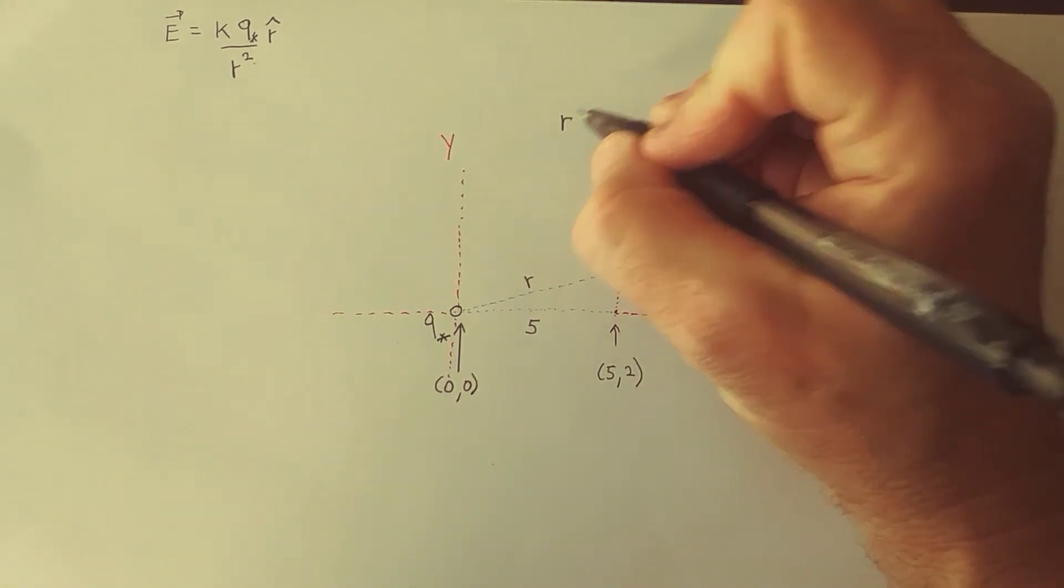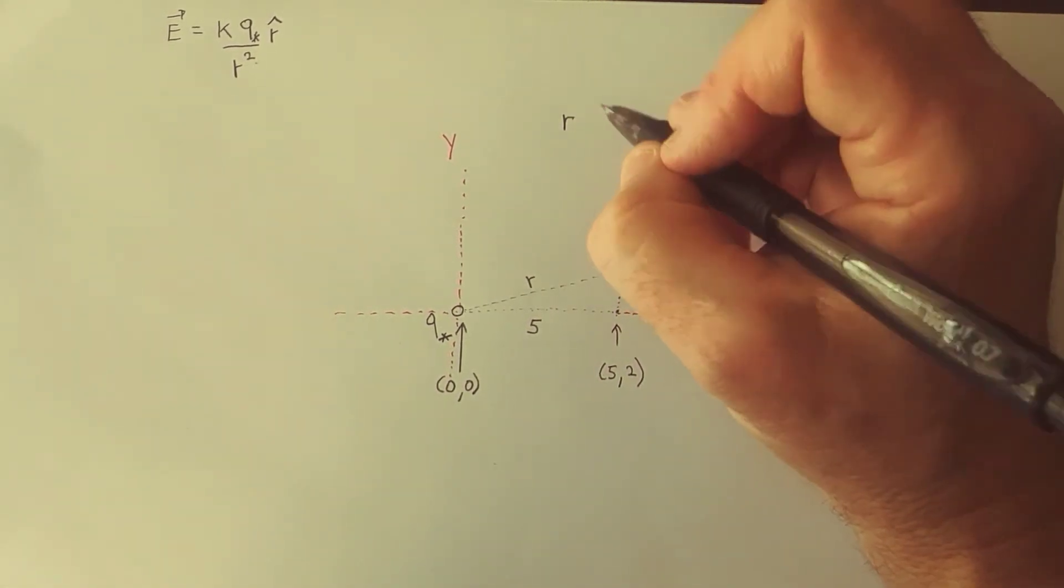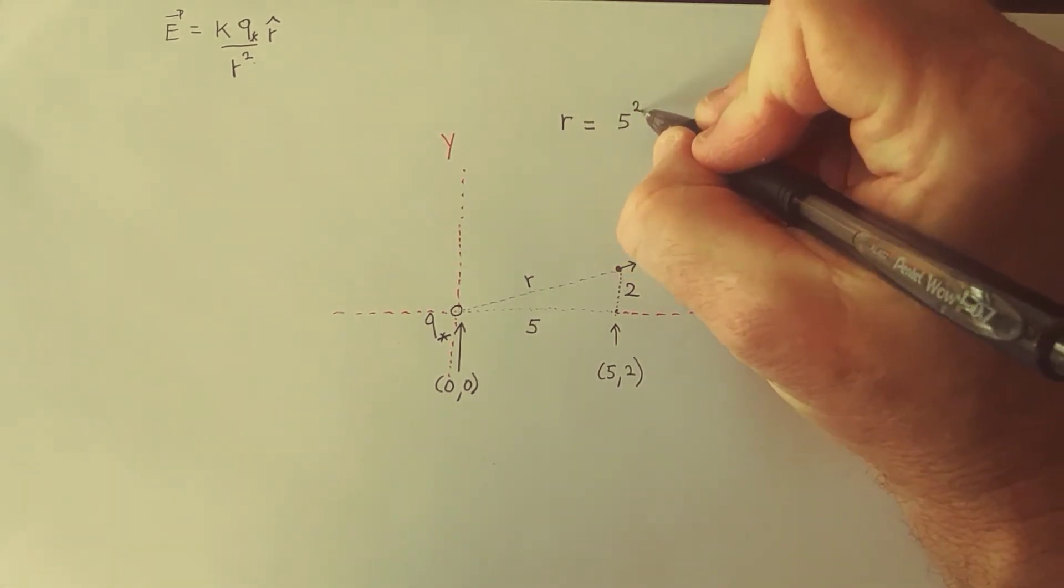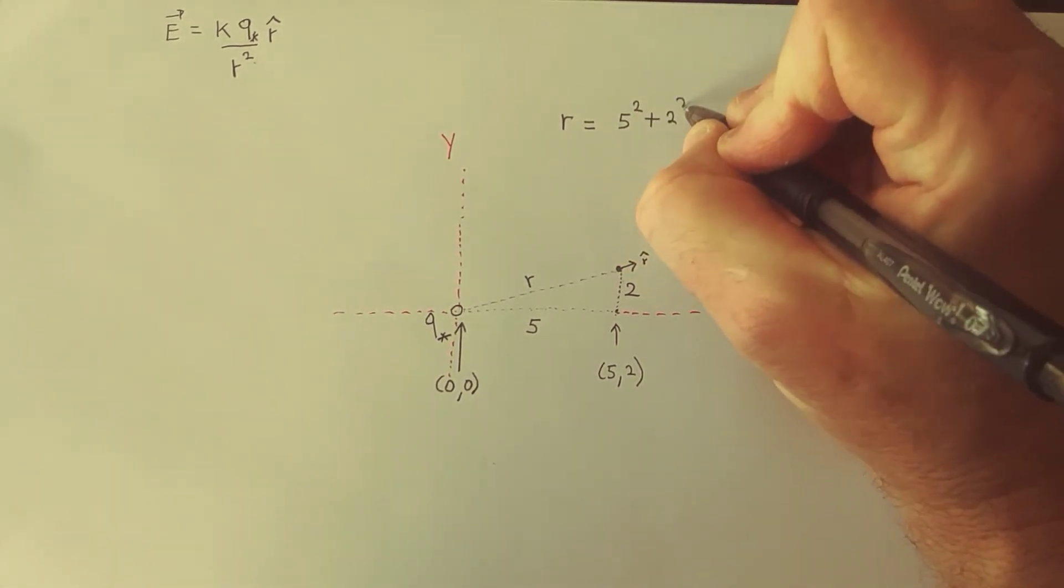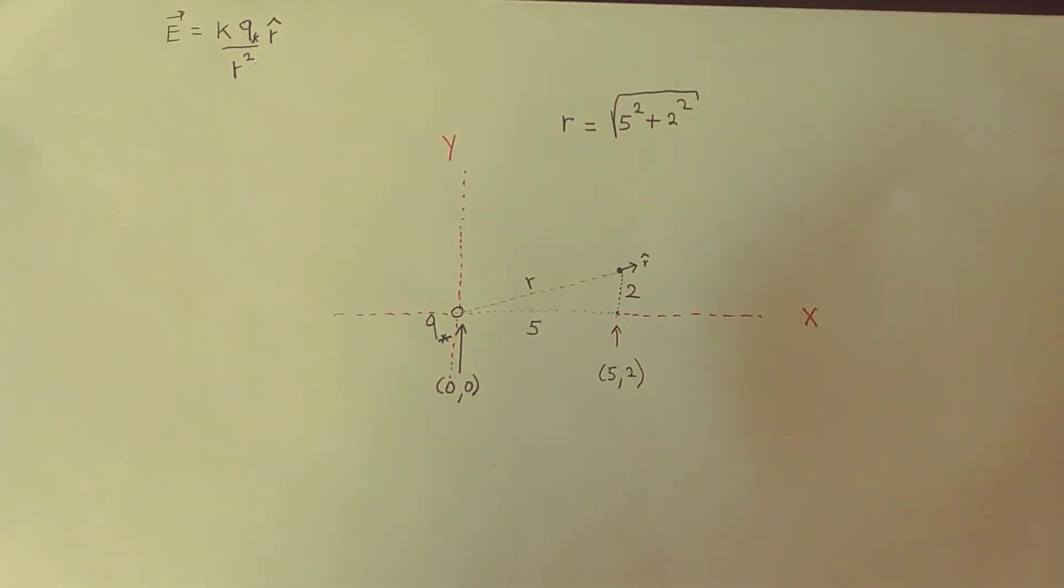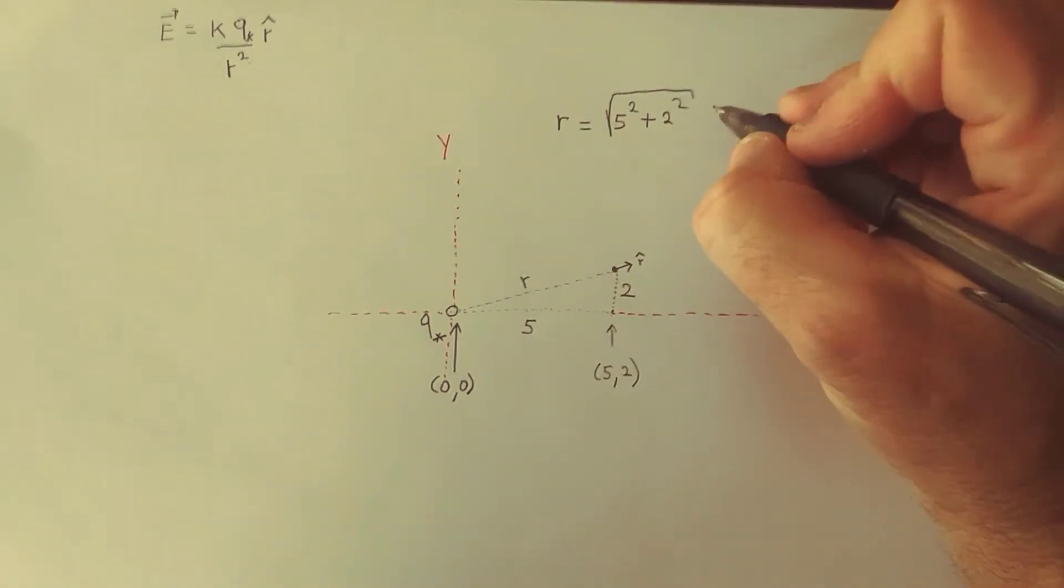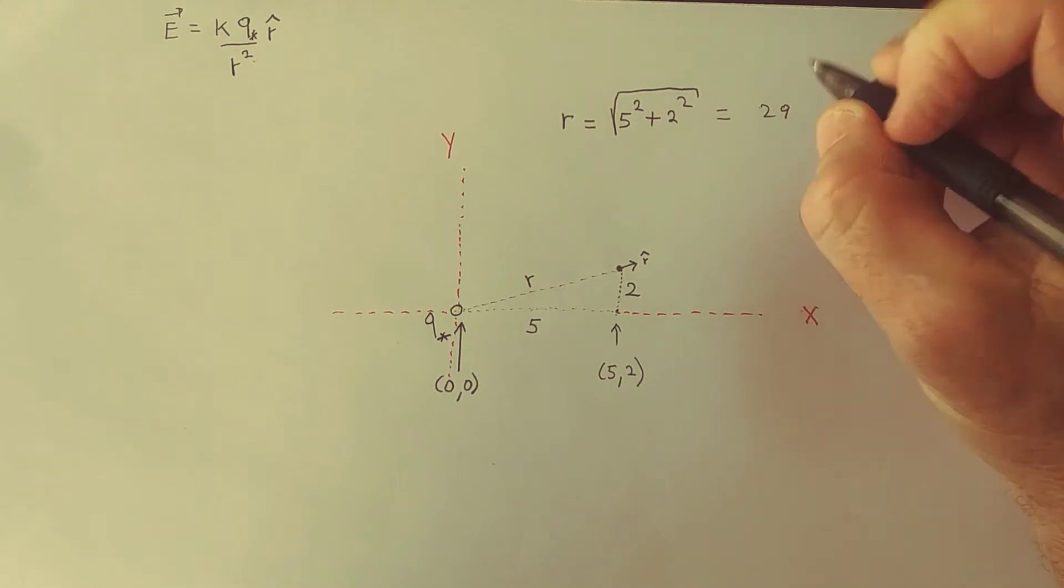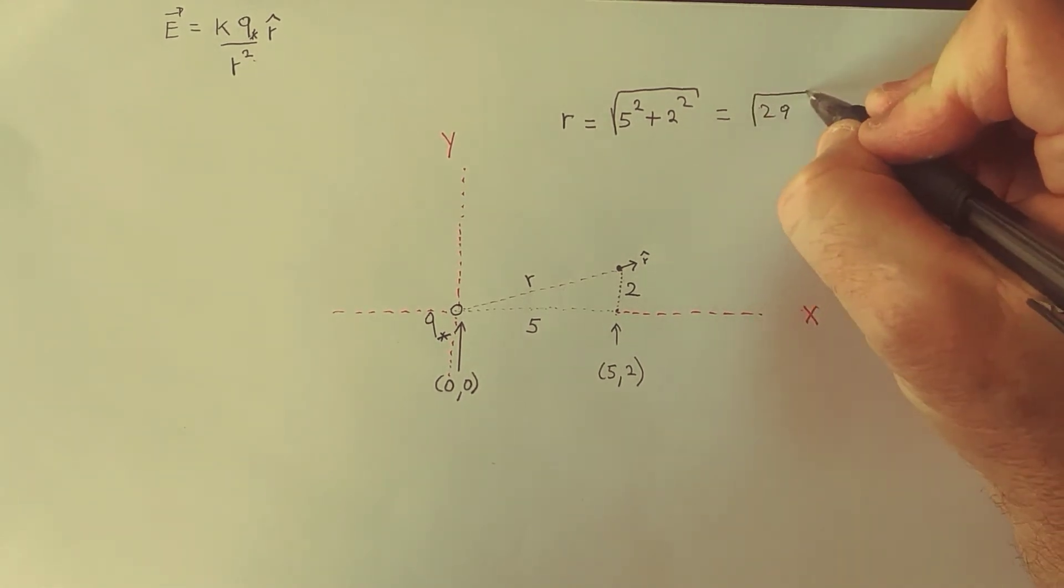So R is equal to by Pythagoras theorem 5 squared plus 2 squared square root. That's 25 and 4, that's 29, the square root of 29.